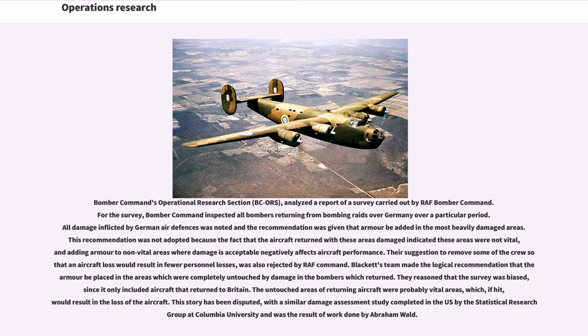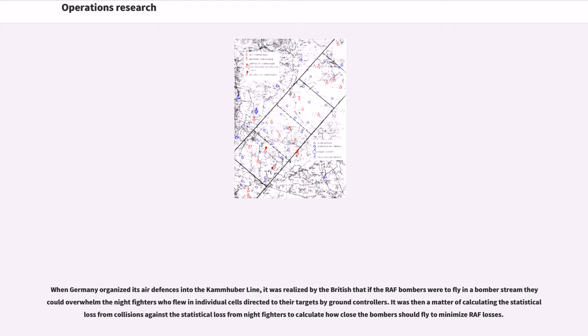This story has been disputed, with a similar damage assessment study completed in the U.S. by the Statistical Research Group at Columbia University as the result of work done by Abraham Wald. When Germany organized its air defenses into the Kammhuber line, it was realized by the British that if the RAF bombers were to fly in a bomber stream, they could overwhelm the night fighters who flew in individual cells directed to their targets by ground controllers. It was then a matter of calculating the statistical loss from collisions against the statistical loss from night fighters to calculate how close the bombers should fly to minimize RAF losses.